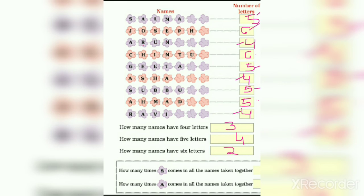Next, how many times S comes in all the names taken together? Let us search S. 1, 2, 3, 4. You are right.